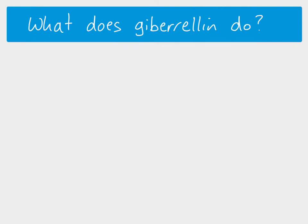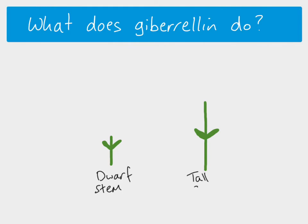These studies were done particularly with pea plants, and if you look at pea plants there are two phenotypes to do with their height. You can have dwarf pea plants which have a shorter stem, and you can have tall plants — two distinct phenotypes.